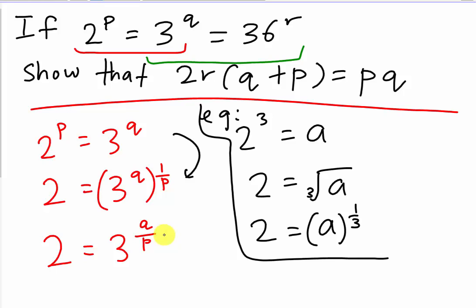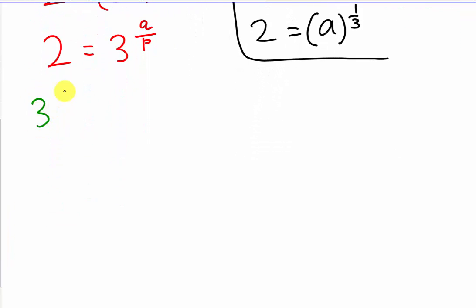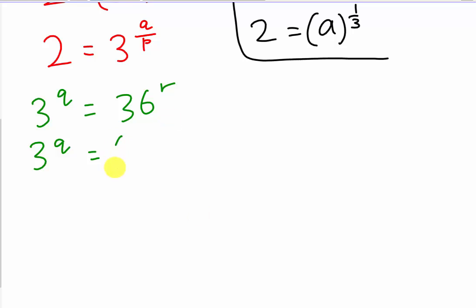Now I go to my second equation: 3^Q equals 36^R. We know 3 to any power won't give exactly 36, since 3^3 is 27 and 3^4 is 81, so 36 is between them. But I know 36 equals 4 times 9, so I can separate it. This gives 2^2 multiplied by 3^2, all raised to the power R.